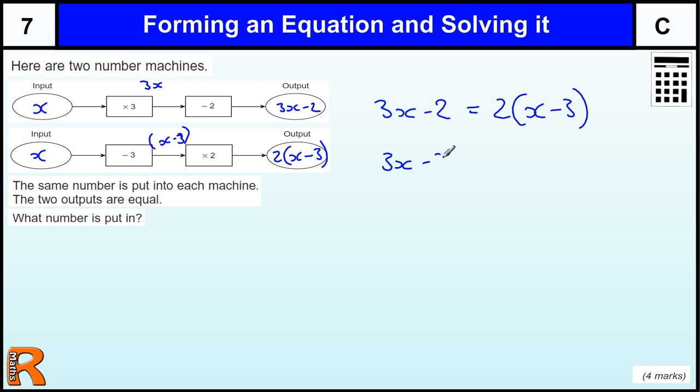So let's multiply out the brackets. We get 2x minus 6. Let's take away the 2x from both sides to get x minus 2 equals minus 6. Then add the 2 to both sides to get x equals minus 4.